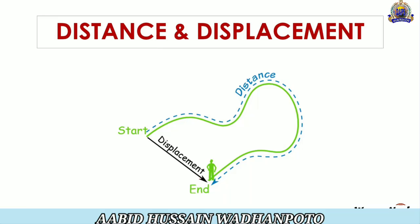Displacement is shorter, clear, and in one dimension and one direction. Simply, the minimum distance — the measurement of length from the Start Point to the End Point — is called the Displacement. The lines shown in Blue represent Distance, while the Black Line in a straight forward direction represents Displacement. Because Displacement is a Vector Quantity. So what is the difference between Displacement and Distance?